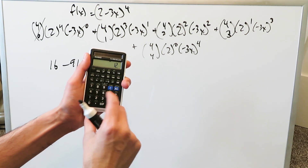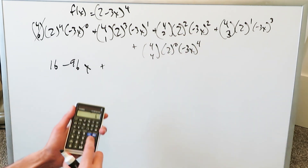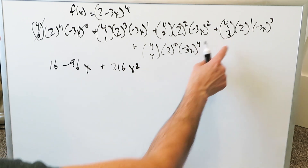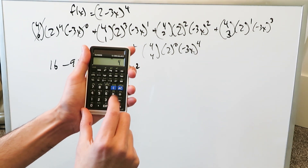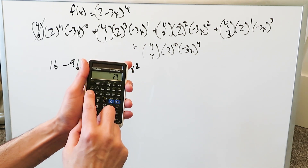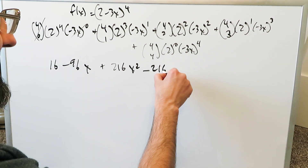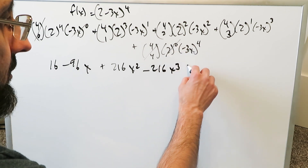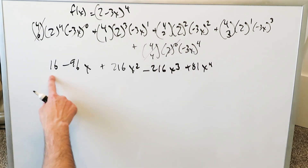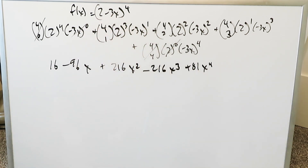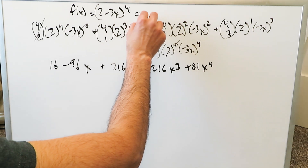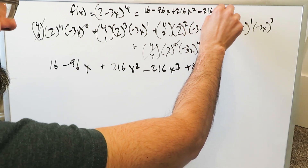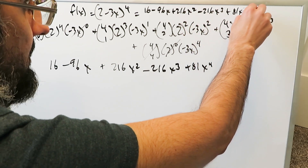Continuing: the 4C3 term gives 24/6 = 4, times 2 × (−27) = −216x^3. The last term: (−3)^4 = 81, giving 81x^4. So the full binomial expansion of (2 − 3x)^4 is: 16 − 96x + 216x^2 − 216x^3 + 81x^4. This is exactly what we should get when expanding using the Taylor series.